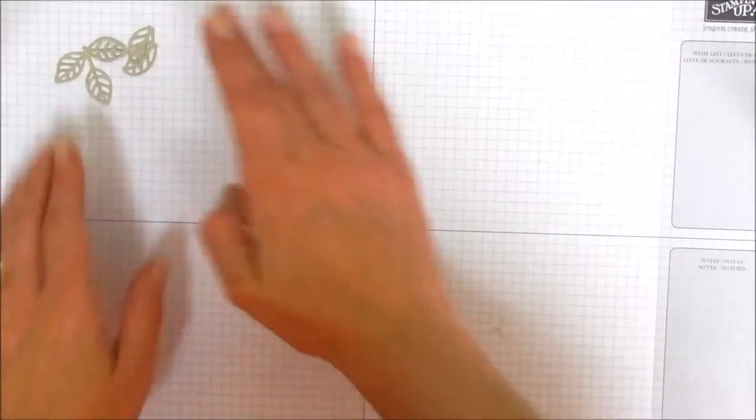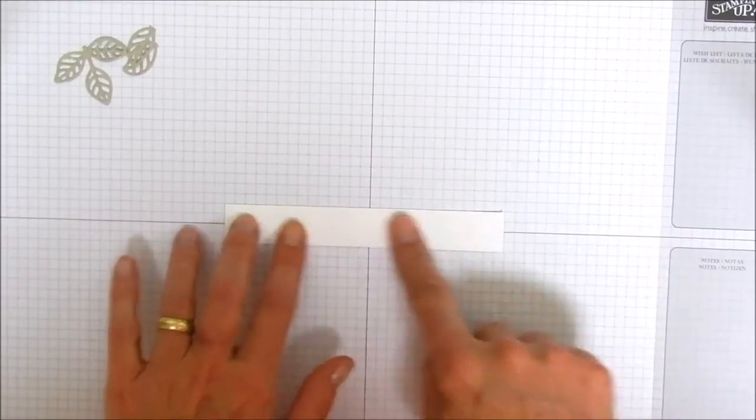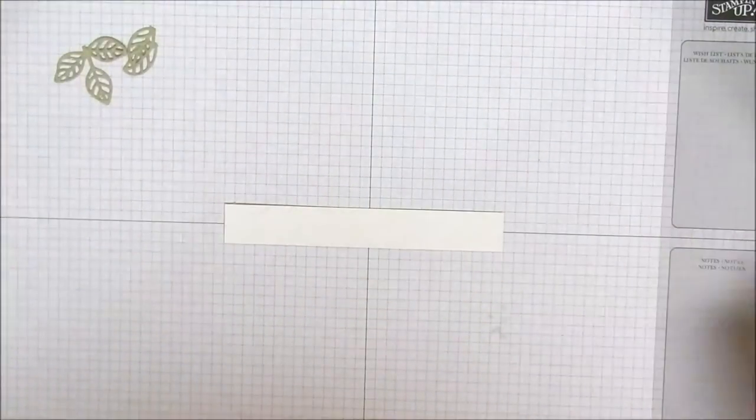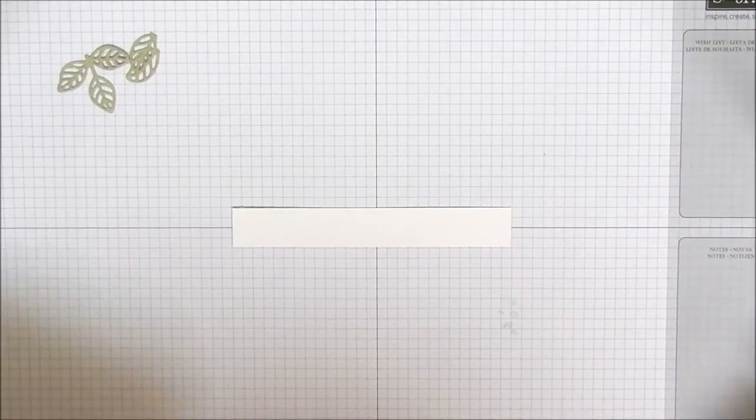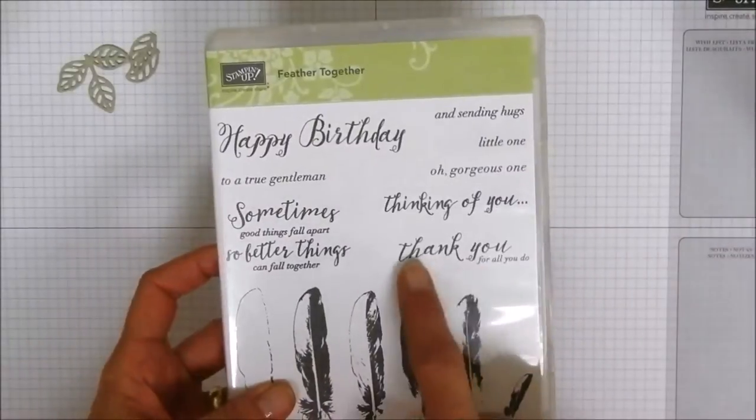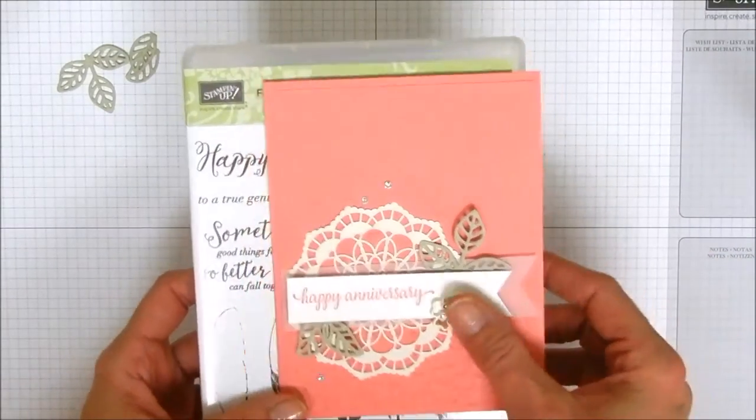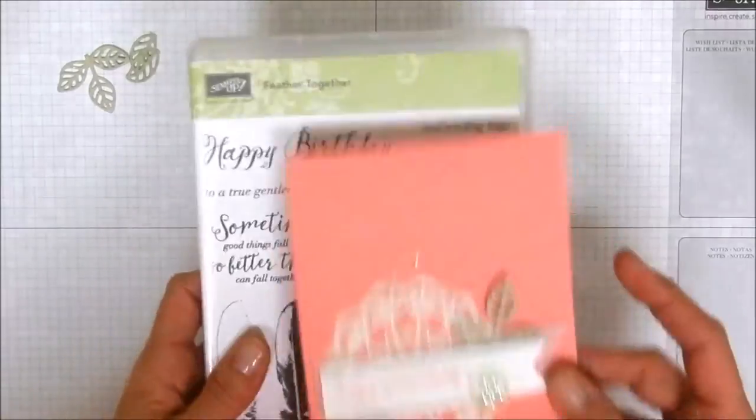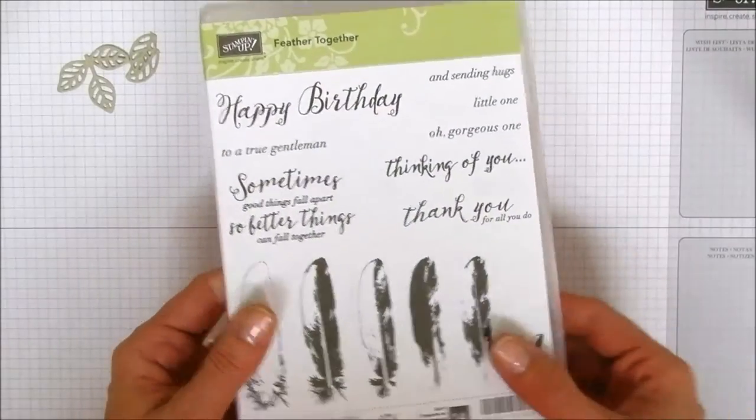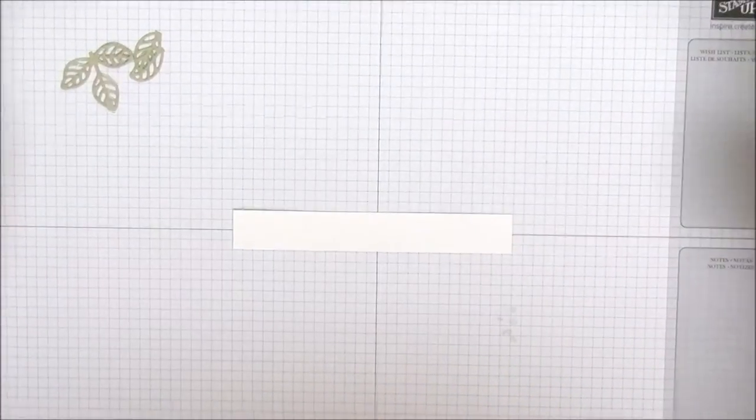So now we've got our little leaves cut apart and let's start putting together our sentiments. Okay so this is my three quarter inch piece of Whisper White and I am going to be using a sentiment from another set in the annual catalog called Feather Together and I'm going to be using this thank you for all you do. Now on this one we made it a happy anniversary card but I use more thank you cards than I do anniversary cards so I wanted to do a thank you. Plus I haven't put ink on any part of this set yet.